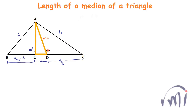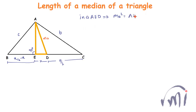Triangle AED is a right-angle triangle where AD equals Ma and DE equals x. So in triangle AED, Ma² will be equal to AE² plus x².